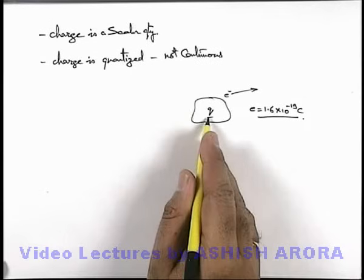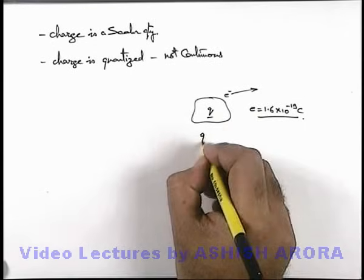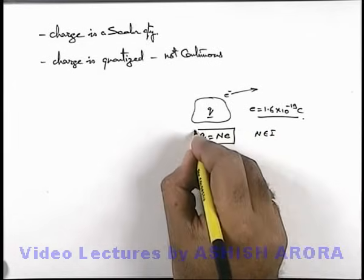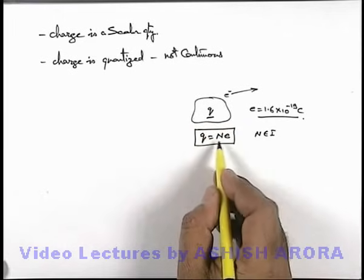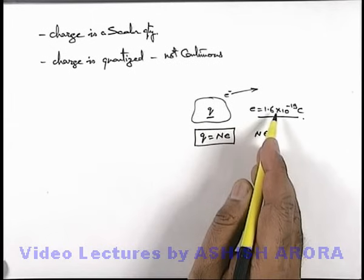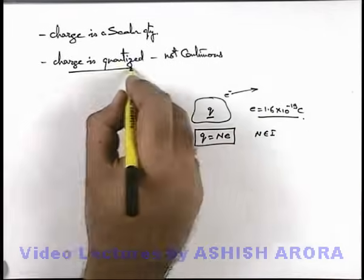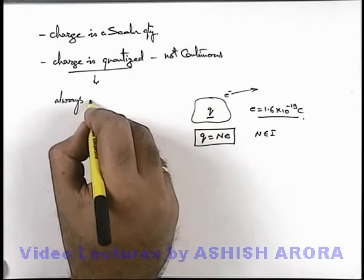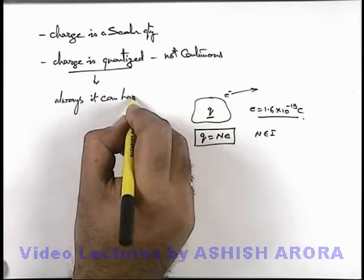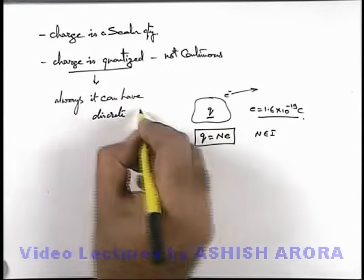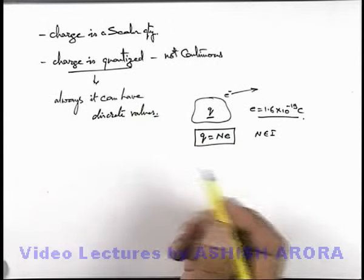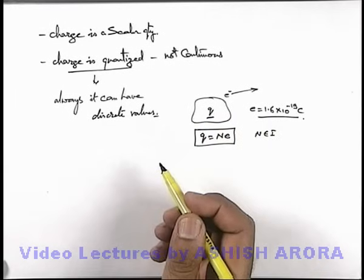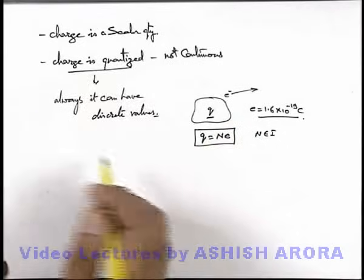So whatever charge the body will attain will be a multiple of this electronic charge so we can write q equals n e, where n belongs to set of integers. Here we can say whatever charge a body can attain will be an integral multiple of the electronic charge. So we can simply say charge is always quantized, always it can have discrete values. So always remember on physical object whenever charge is supplied it must be an integral multiple of electronic charge only. That's why we can say it is not continuous, it is quantized.